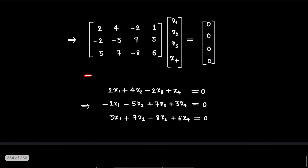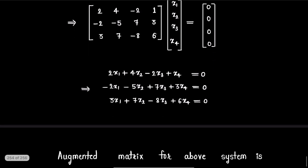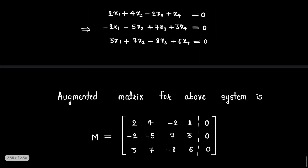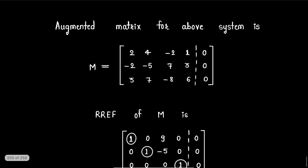After solving this matrix equation, we get this system, which is the homogeneous system of linear equations of 3 linear equations in 4 variables. Now, augmented matrix for this homogeneous system is, say matrix M, which is this matrix.